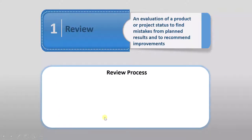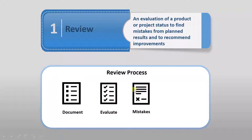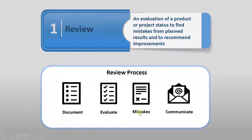This review process will have certain activities within it. The first thing you need is a document on which you will perform the review activity. First, you will do an evaluation of this document. While evaluating, you have to find mistakes. Once you find mistakes, you have to communicate that with the team member so that those mistakes will be fixed. So the complete review process is: getting a document, evaluating it, finding mistakes, and then communicating with the team member.